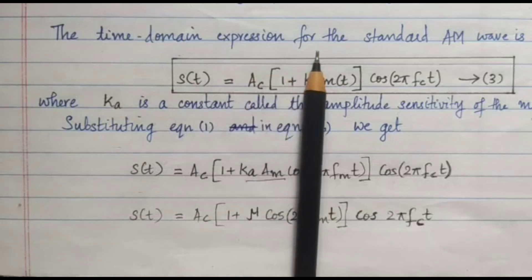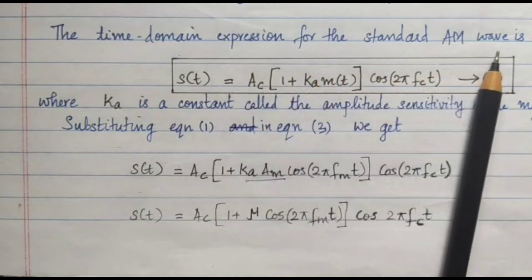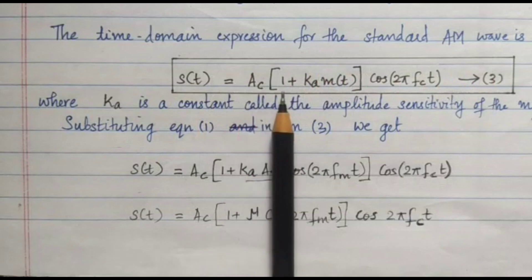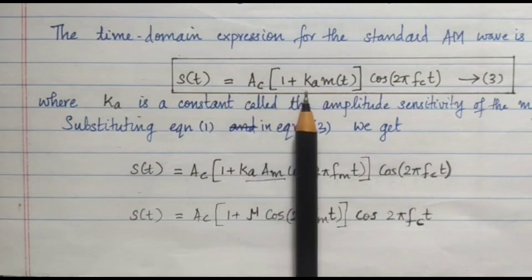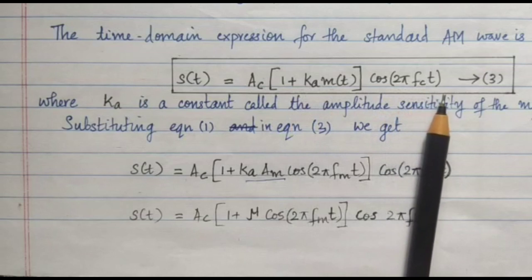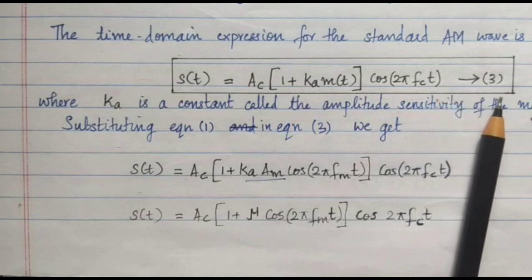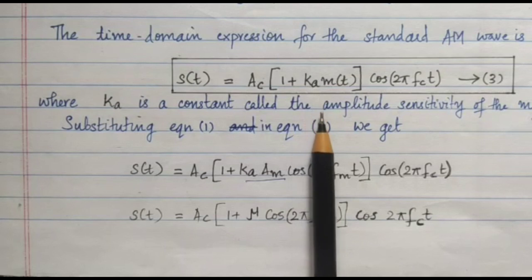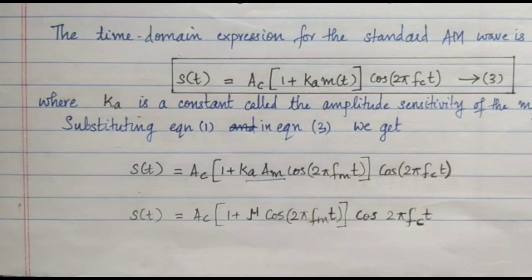The time domain expression for the standard AM wave is S(t) = AC [1 + KA · M(t)] cos(2π FC t), which we mark as equation number 3. Here KA is a constant called the amplitude sensitivity of the modulator. Now we are going to substitute equation 1 into equation 3.